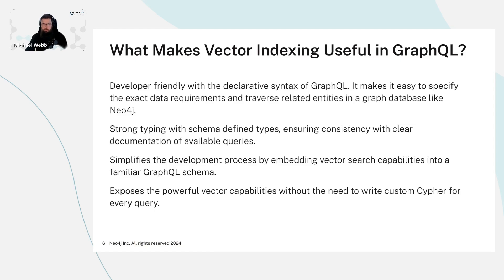So what makes it useful in GraphQL specifically? Well, GraphQL is very developer friendly — it has a declarative syntax that makes it easy to specify the exact data requirements from the client side. And especially with GraphQL and Neo4j, it's nice and easy to traverse related entities. With strong typing and schema-defined types, it ensures consistency with clear documentation of available queries. It simplifies the development process by embedding vector search capabilities into a familiar GraphQL schema, and exposes powerful vector capabilities without the need to write custom Cypher for every query yourself.